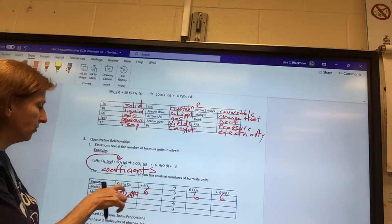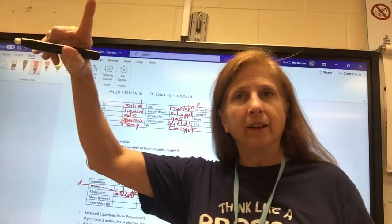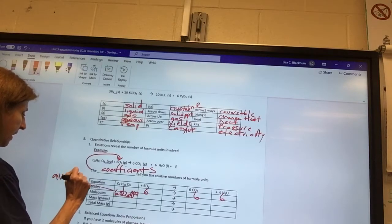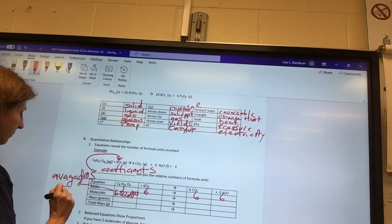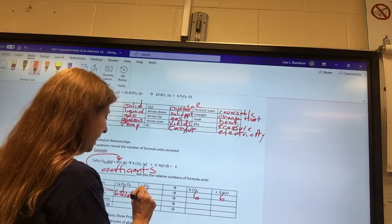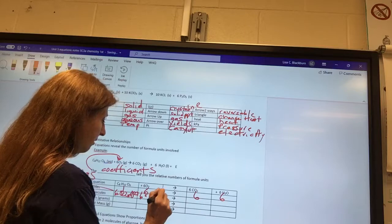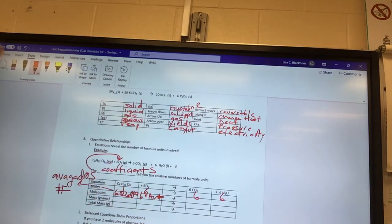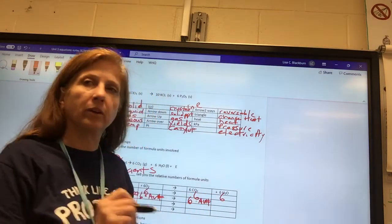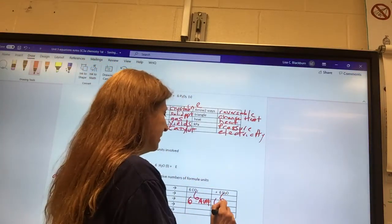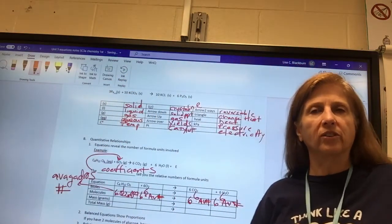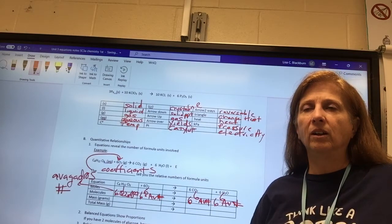And whose number is that? Do you remember? He's Italian. He's fabulous. What's his name? Avogadro, right. So if I wanted the number of molecules of oxygen, it would be 6 times Avogadro's number. If I wanted the number of molecules of carbon dioxide, it would be 6 times Avogadro's number. 6 times Avogadro's number. If you want to know the number of molecules. Does that make sense?